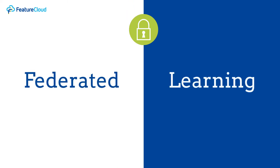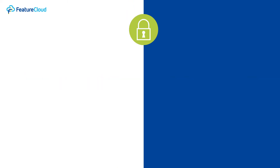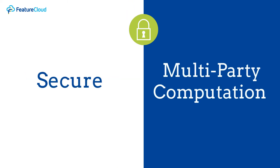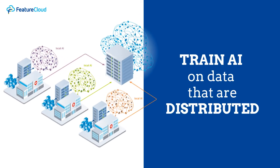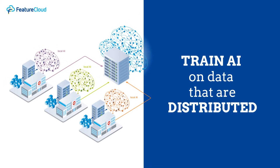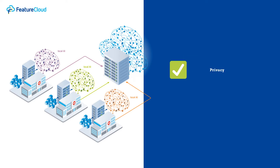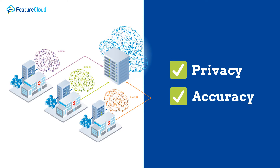FeatureCloud uses privacy-preserving techniques such as federated learning and secure multiparty computation, and enables the training of AI models on datasets that are distributed globally at different research institutions without violating patient privacy and without loss of scientific accuracy.